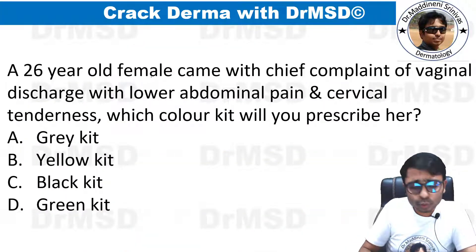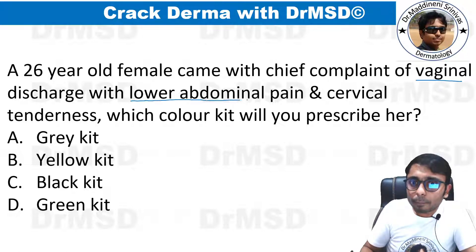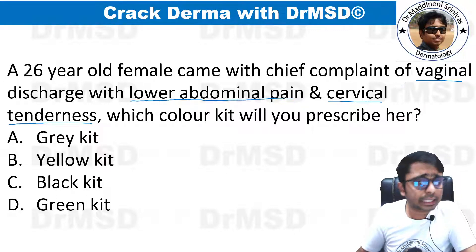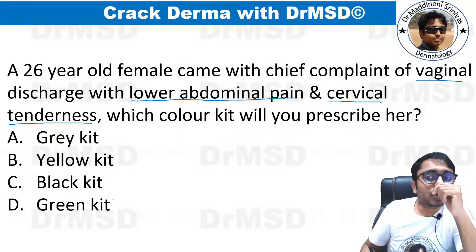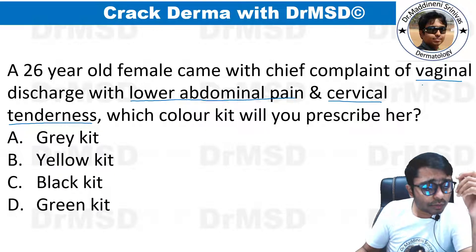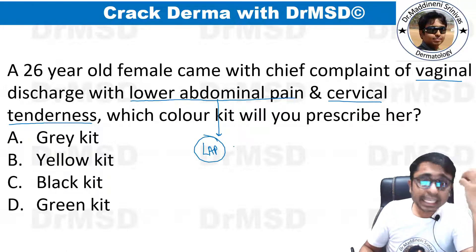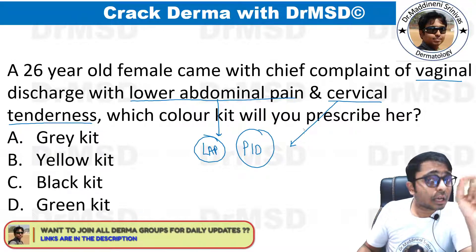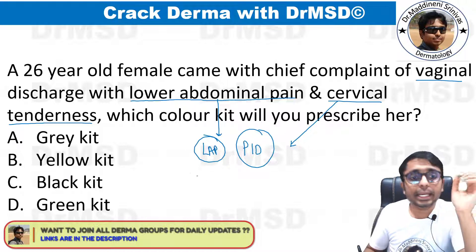A 26-year-old female came with vaginal discharge and lower abdominal pain with cervical tenderness. Some students marked the green kit option thinking it was just vaginal discharge, but if lower abdominal pain is mentioned, you should think of pelvic inflammatory disease.